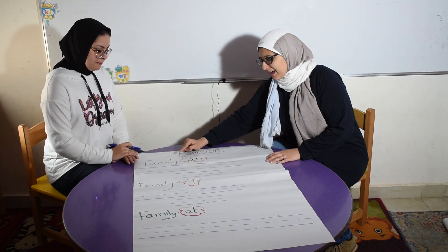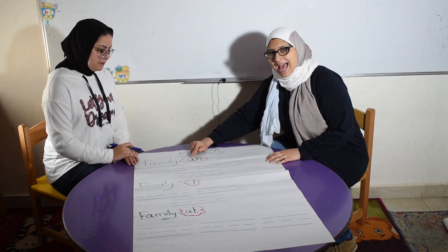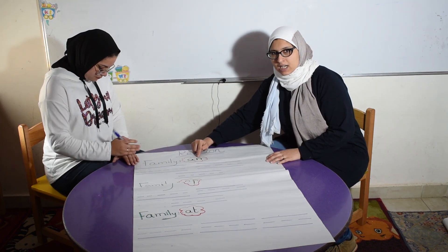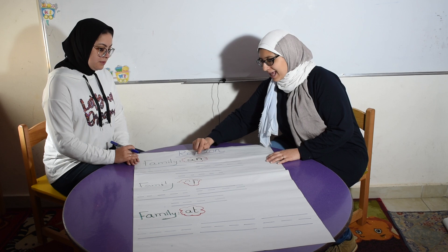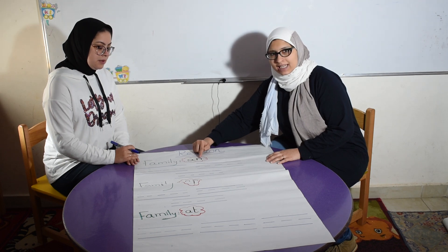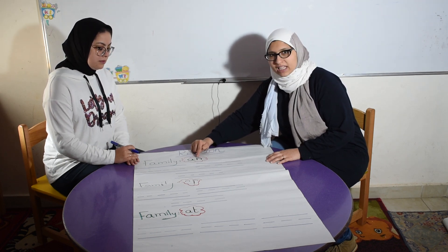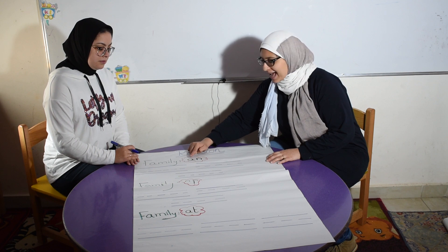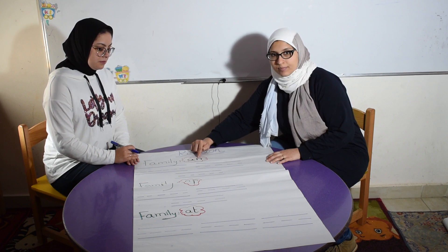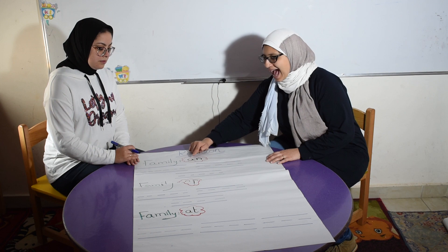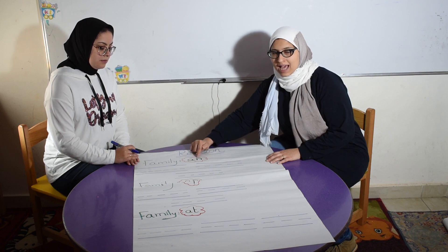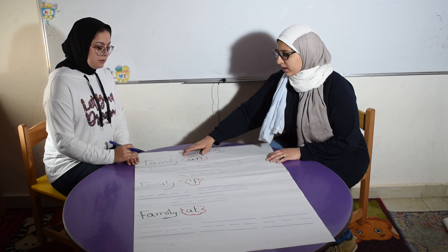First of all, we have family AN. It's A, N. Sound A and N. How we can read it? A, N. An. Okay, again please. An.